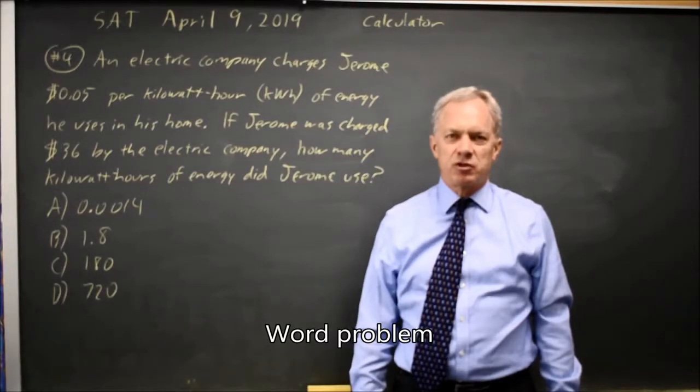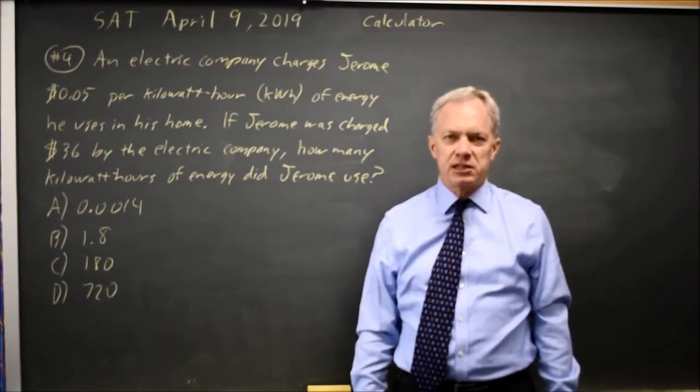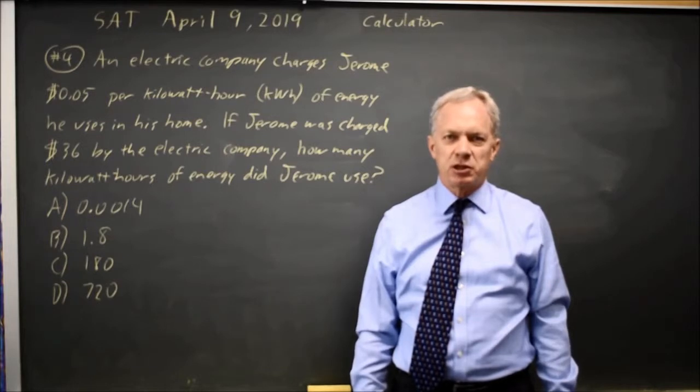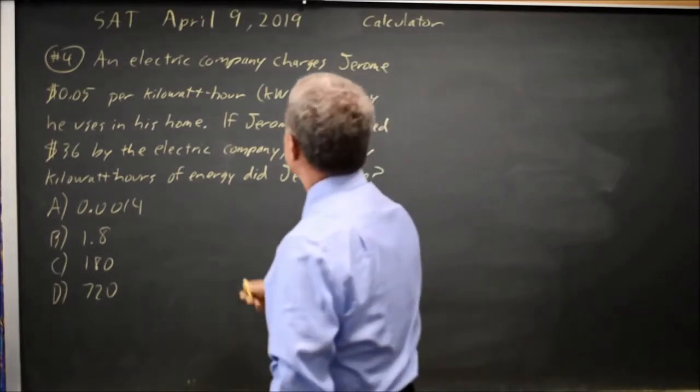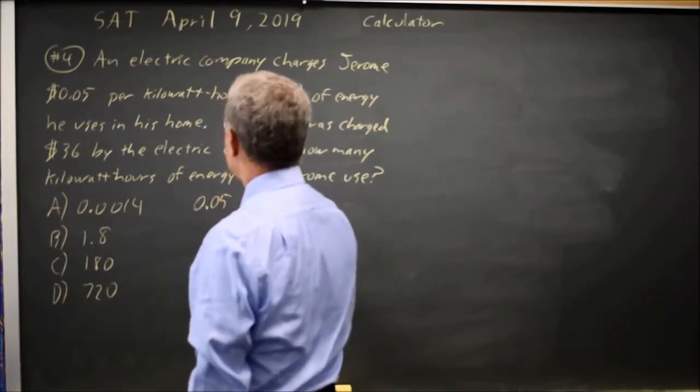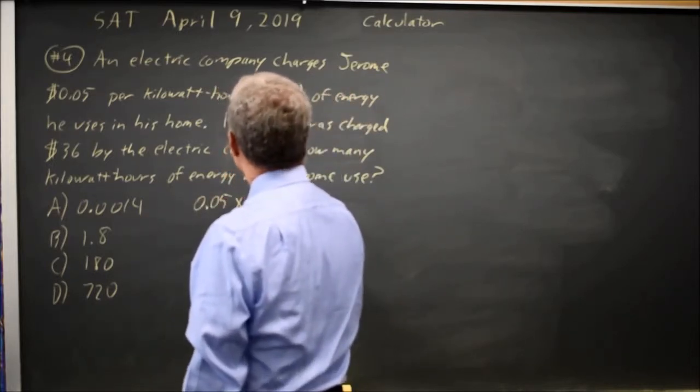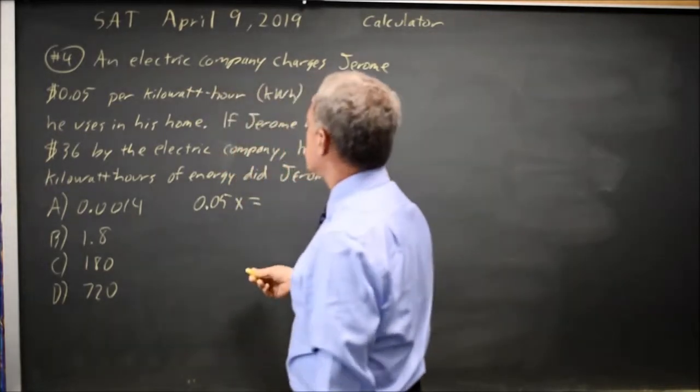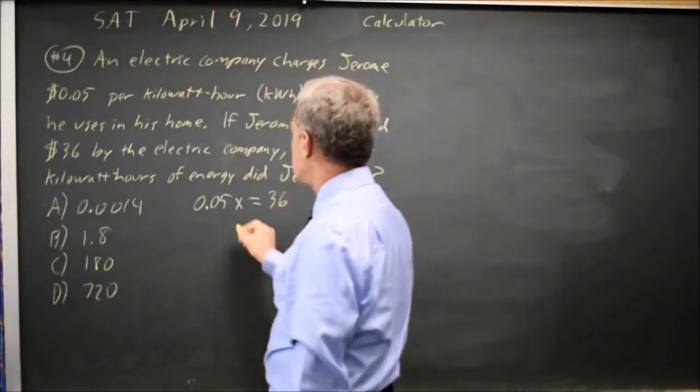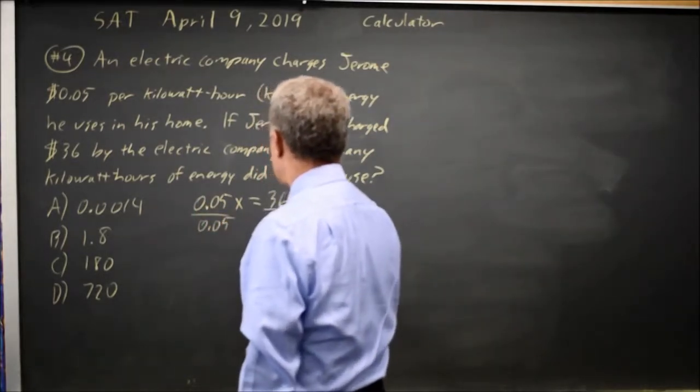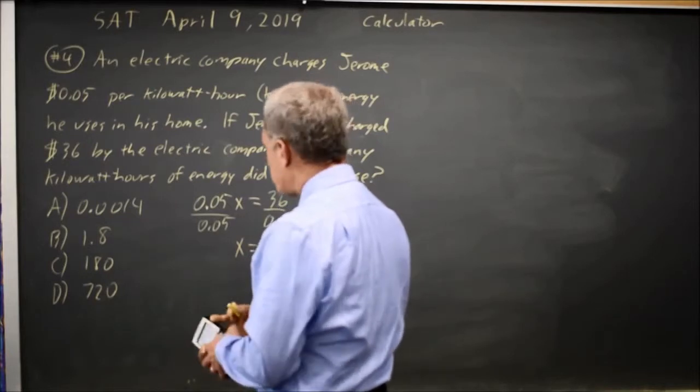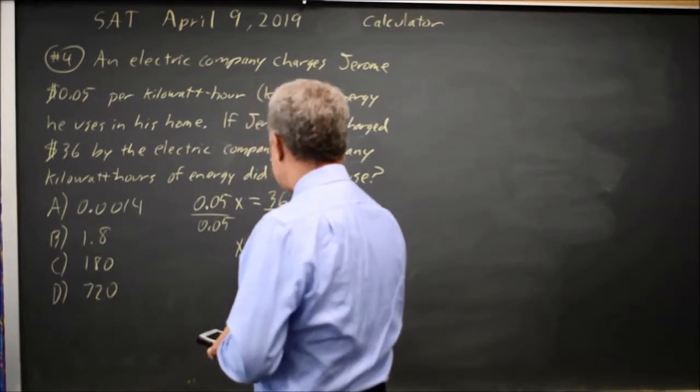This is calculator question number 4 from April 2019 SAT. College Board gives us a description of an electric bill at 5 cents per kilowatt hour with a total bill of $36 and they ask how many kilowatt hours were we billed for. So if it's 0.05 times x is how much he's billed and $36 is also how much he's billed, I can divide both sides by 0.05 to get x equals 36 over 0.05 which is 720.